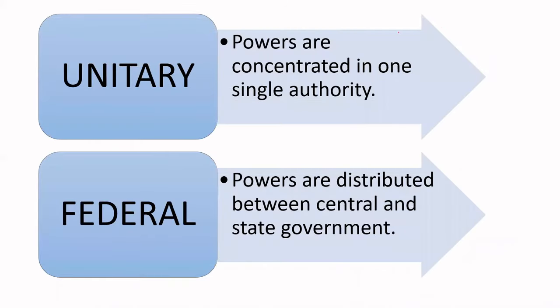To start with, let us understand the basic difference between these two. When we talk about a unitary form of government, we are talking about one single unit — meaning the powers are concentrated in one single authority. Whereas, when we talk about a federal form of government, we are talking about distribution of powers between the central and the state government. The powers here are specifically distributed between the center and the state.